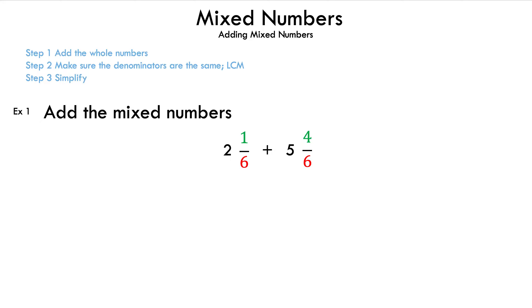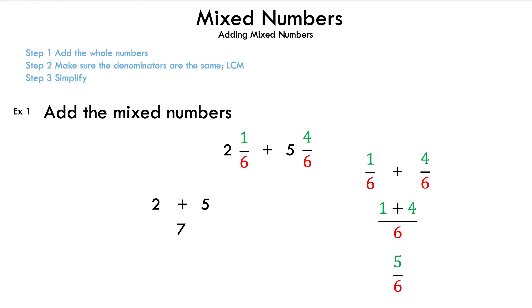Let's read the question: add the mixed numbers 2 and 1/6, and 5 and 4/6. The first step is to add the whole numbers 2 and 5, which is 7. Now we can write down our fractions, which are 1/6 and 4/6. Since we have a common denominator of 6, we add our numerators 1 and 4, and the result is 5/6. Since we have a proper fraction, we put those two numbers together — the 7 and the 5/6 — and that is our answer.